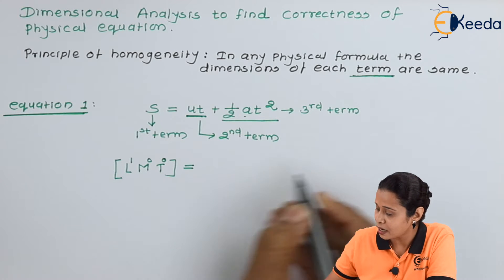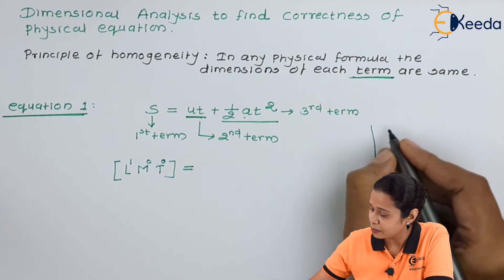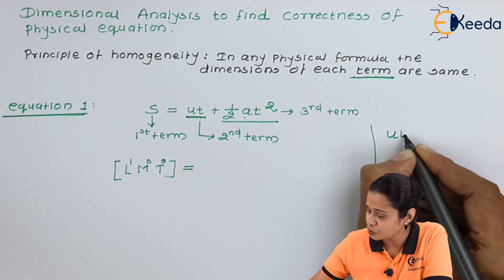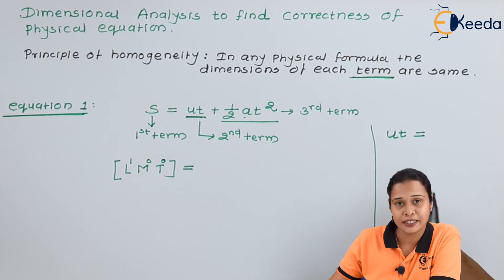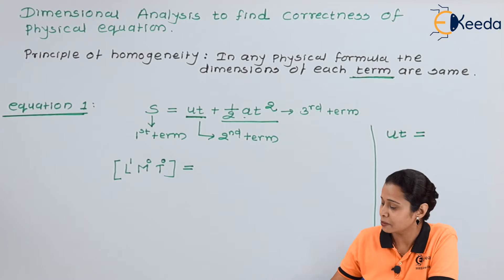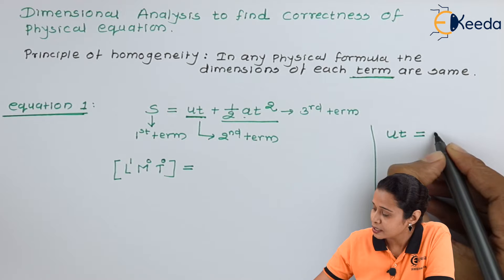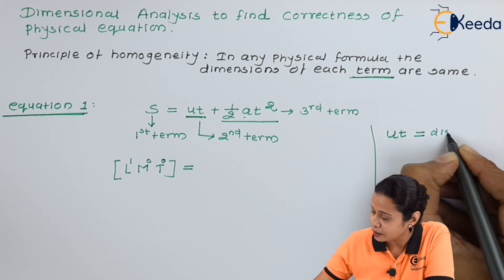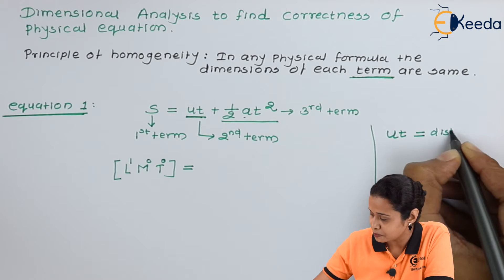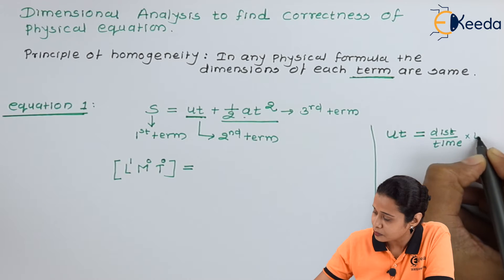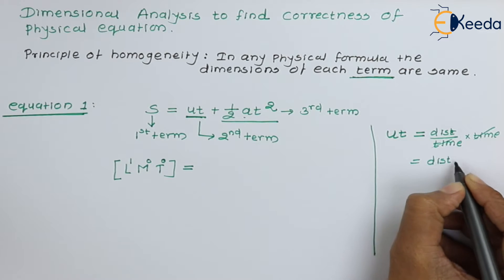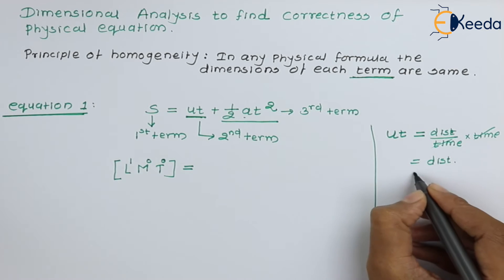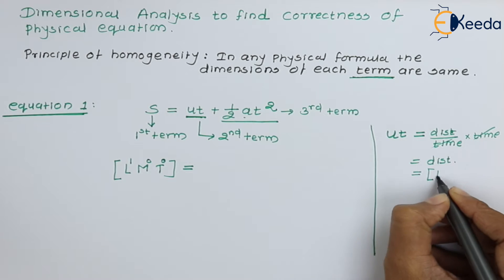Now let us start to find what is the dimension of second term that is U, T. We know U is the velocity that is initial velocity and T is the time. The velocity is displacement per unit time or distance per unit time into time. This time factor will get cancelled. Here you have distance.